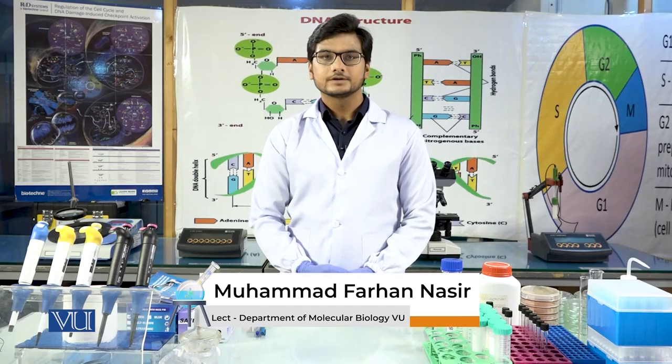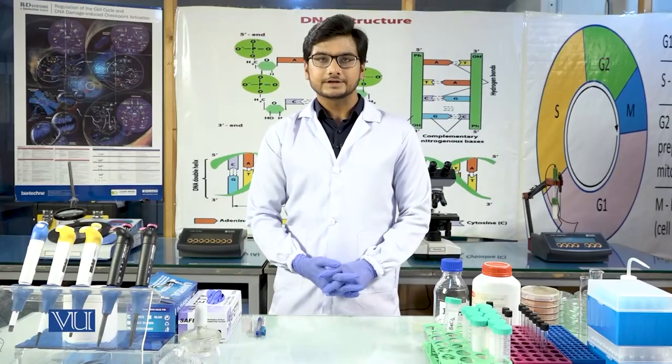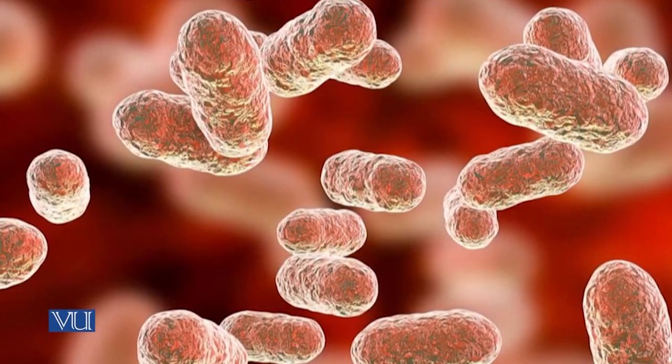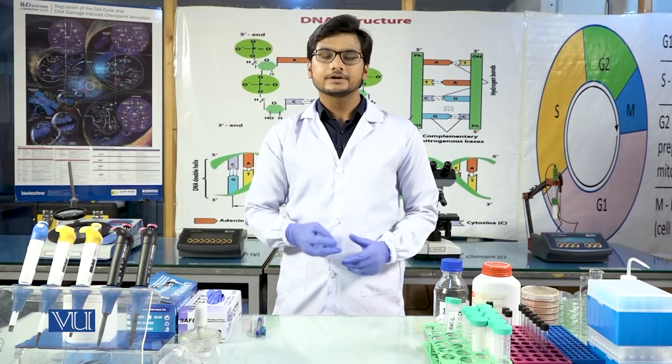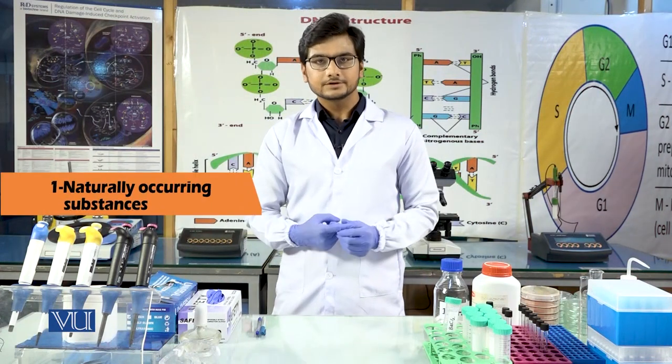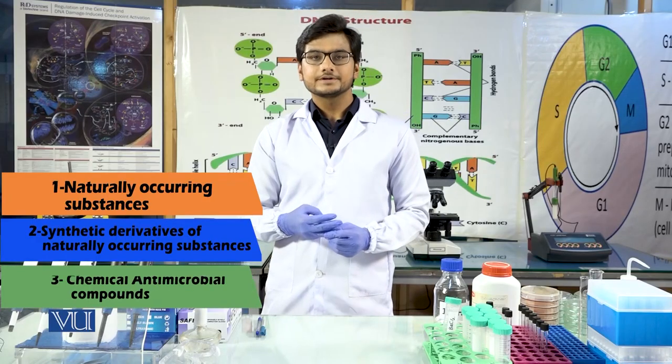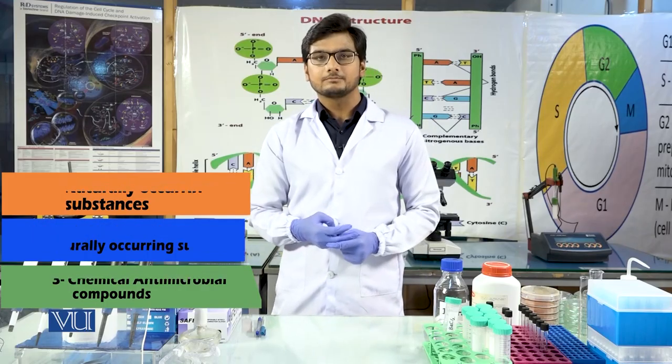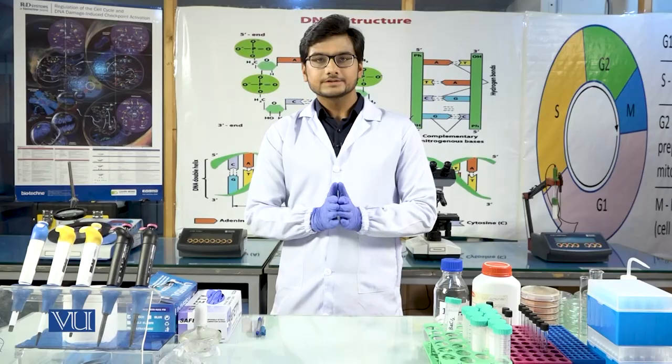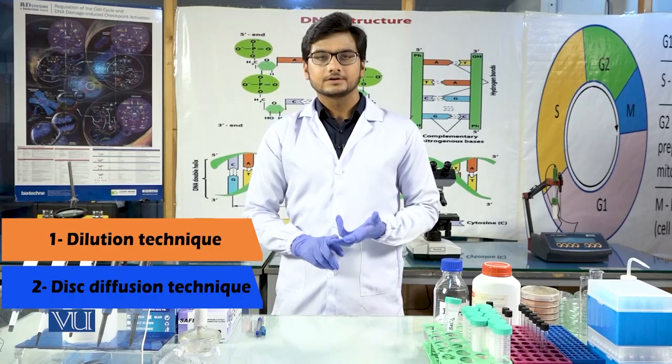In this video we will perform antimicrobial susceptibility testing. It is used to treat infections caused by bacteria using different antimicrobial substances. There are three types of antimicrobial substances: number one is naturally occurring substances, number two is synthetic derivatives of natural occurring substances, and number three is chemical antimicrobial compounds. There are two techniques basically used for this test: number one is the dilution technique and number two is the disc diffusion technique.